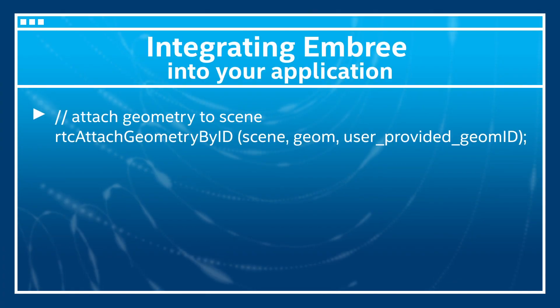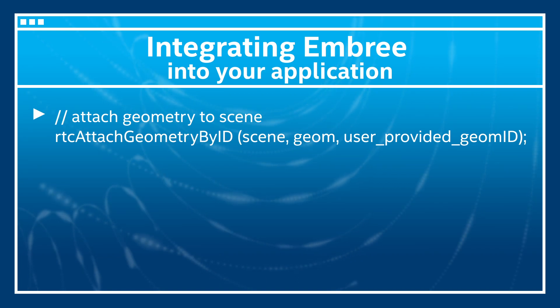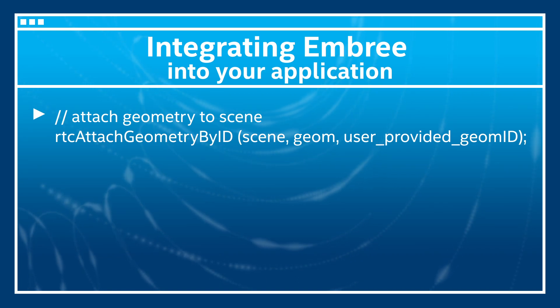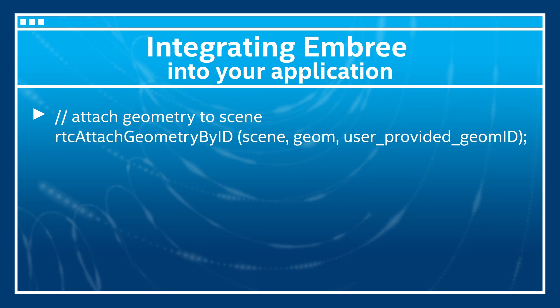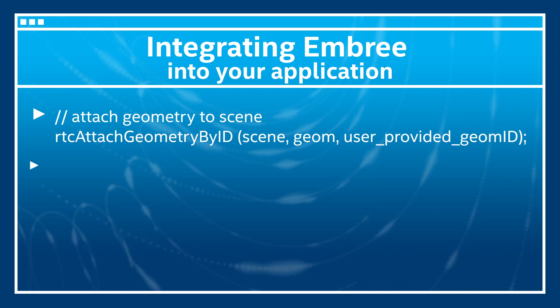The geometry is now constructed but not yet contained in any scene. Thus the next step is to attach it to the scene we created previously using the RTC attach geometry by ID call. The user-provided geometry ID identifies that geometry and will later get returned in case a triangle of that geometry is hit.